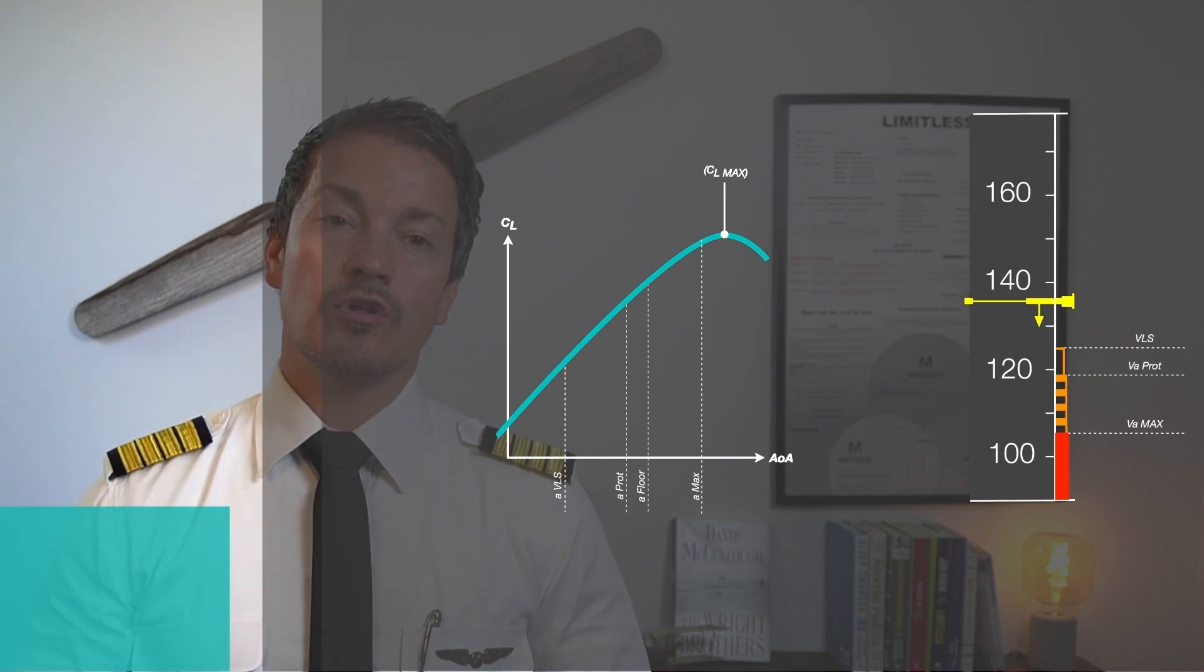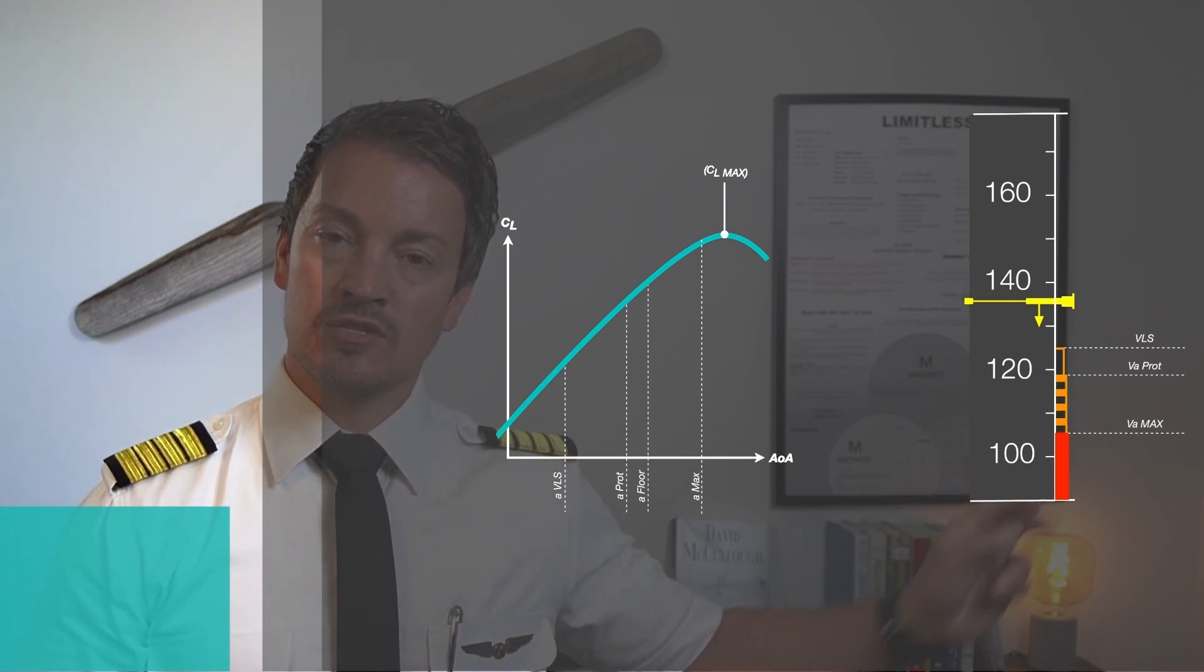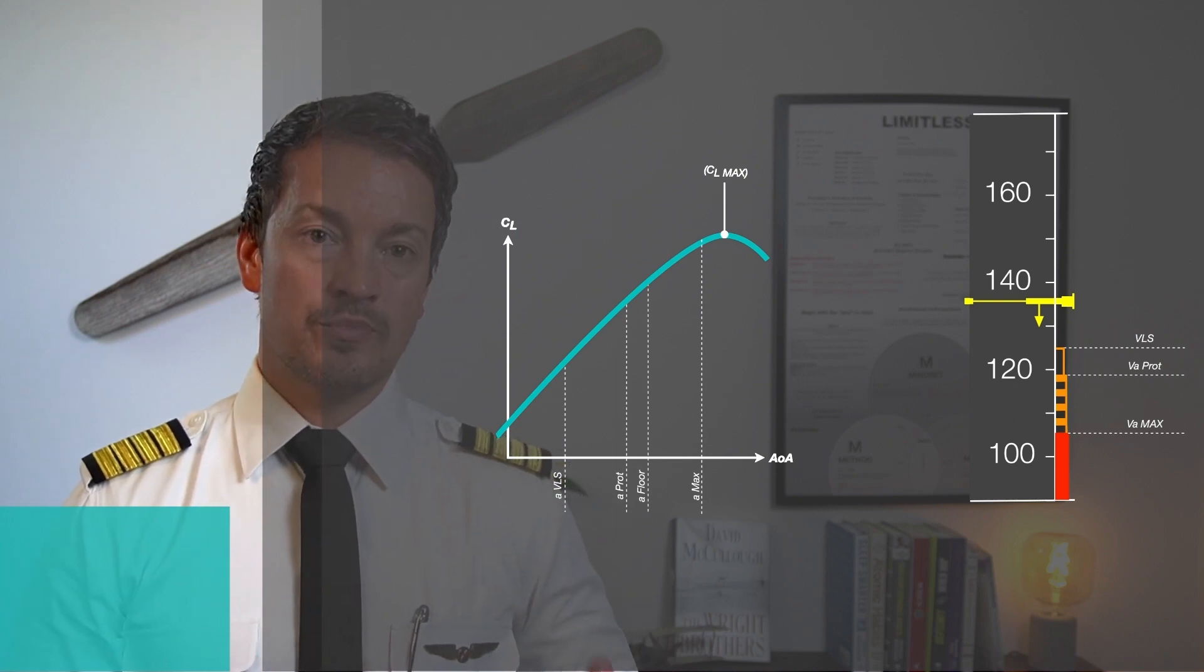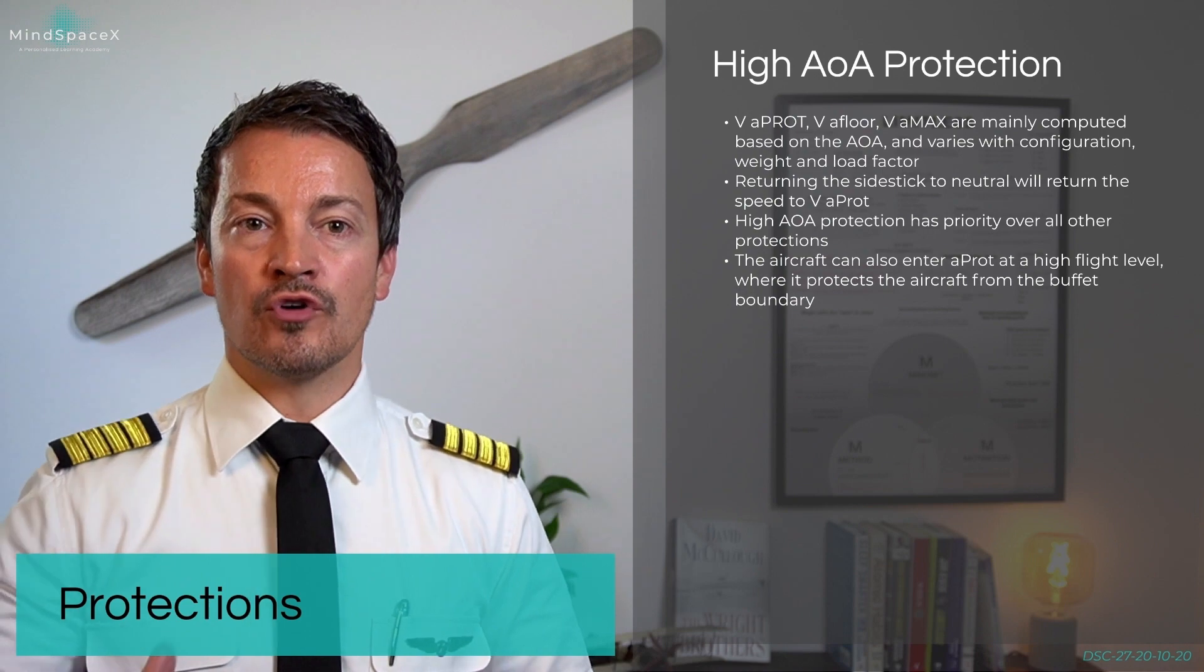When holding full side stick back deflection, you can only allow the speed to go down to V-alpha max. This is where the protection kicks in in such a manner that the aircraft overrides you.